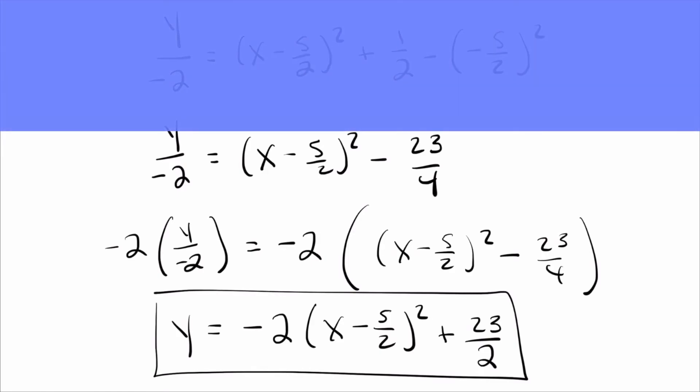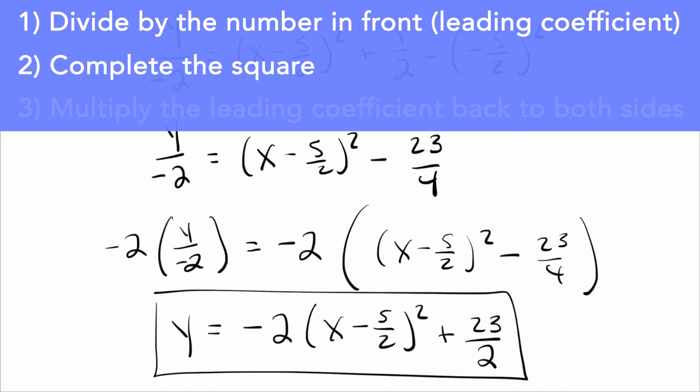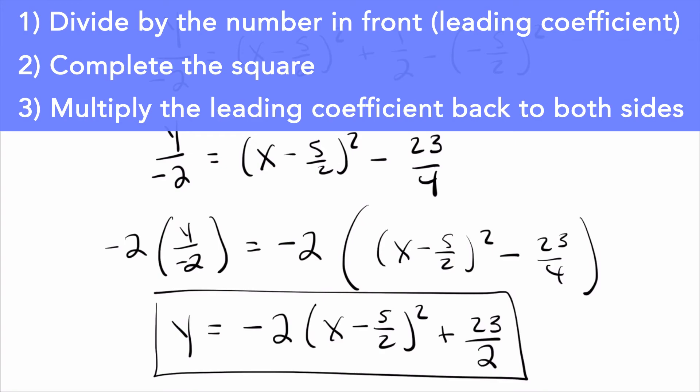So really, we saw all you're doing is you're getting rid of that number in front, completing the square, and then moving it back. So that's why I believe if you can complete the square without a number in front, you can definitely do it with a number in front. Hope that makes sense. If you have any questions, or if you want me to talk about anything else, please let me know in the comments below. If you found this video helpful, please give me a thumbs up and subscribe, and I'll talk to you guys again soon.